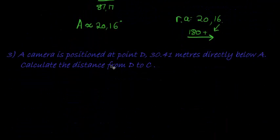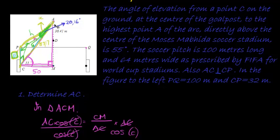So they tell us that a camera is positioned at point D, 30.41 meters directly below A. Calculate the distance from D to C. So, there is point D. So, the distance, it's 30.41 meters below point A. So, that distance is 30.41 meters. And they're asking us to go and calculate the distance from D to C. This distance. That distance there. So again, that distance appears in two triangles. It's in this triangle, C, M, D. And it's in the triangle, A, D, C. Which triangle do we have more information of?